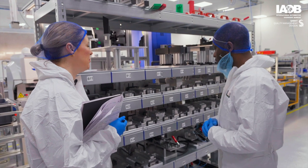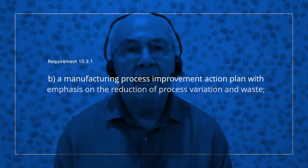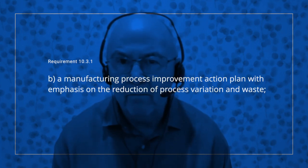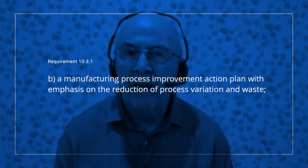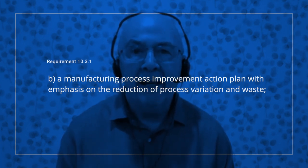That's great, thank you very much AJ. So let's summarise. A key requirement of IATF 16949 is clause 10.3.1 related to continual improvement, which includes the requirement for the organisation to have a manufacturing process improvement plan with emphasis on reduction of process variation and waste.